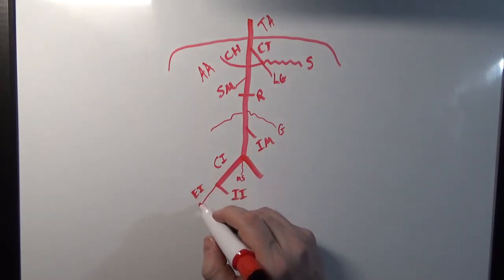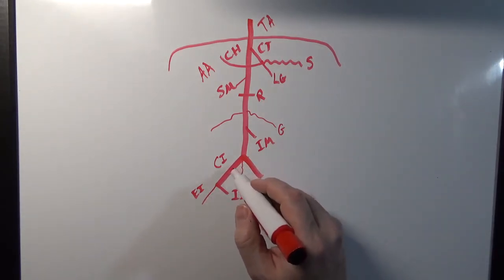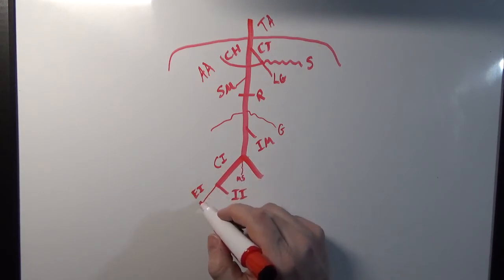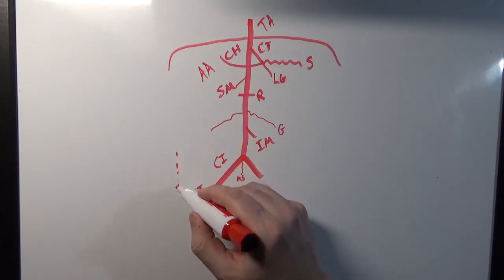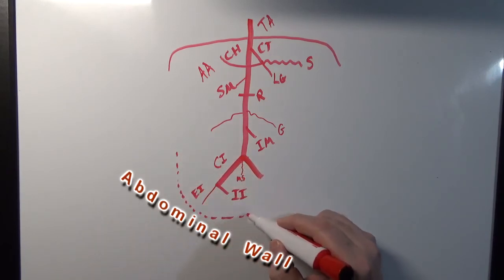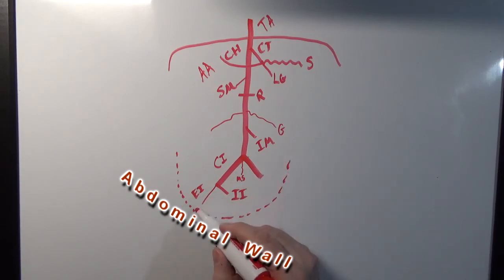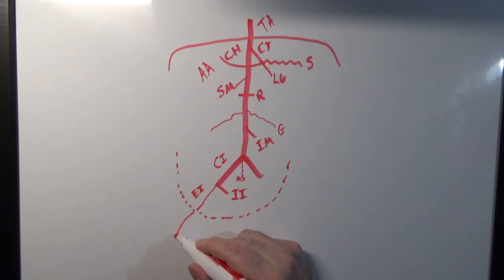Coming back to this spot over here where the common iliacs branch into the internal and external iliacs. This external iliac is going to pierce the abdominal wall, emerge into the femoral triangle and in the thigh, and after it passes through the abdominal wall the name is going to change, and the name changes to the femoral artery.